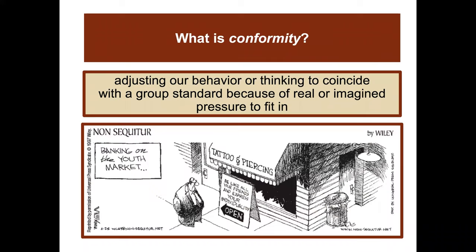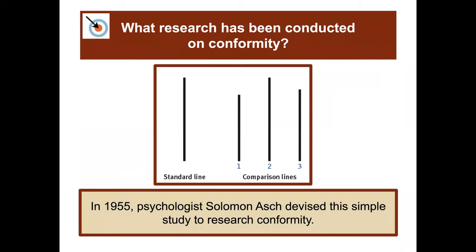So what is conformity? The definition is adjusting our behavior or thinking to coincide with a group standard because of a real or imagined pressure to fit in. One of the most famous studies within the field of conformity was done in 1955 by psychologist Solomon Asch. He devised a very simple study to research conformity.